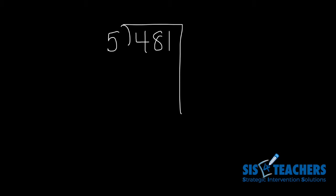Students are going to use the skills they understand for multiplying up to help them. However, in this case, they're going to keep track of how many groups they're taking out by subtracting it within the algorithm. For 481 divided by 5, we're asking how many groups of 5 are in 481.